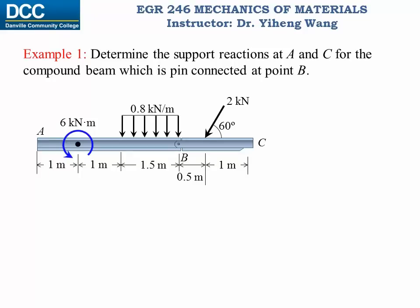We remove the supports and set up our coordinate system. To complete the free body diagram of this compound beam, we note the support reactions. At point A, we have a fixed support, therefore there are three associated support reactions: a horizontal force, a vertical force, and a moment. All three are drawn according to the assumed positive directions.